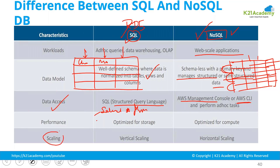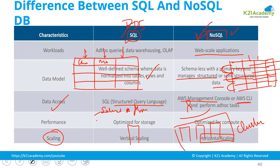Another difference is on the scaling part. With RDS, you can have only vertical scaling. With NoSQL, you can have horizontal scaling on the database, meaning multiple databases will be functional and responding to queries from users. You can have a cluster of databases that automatically scales with multiple instances added to respond to user queries. Horizontal scaling is supported in DynamoDB, not in RDS.